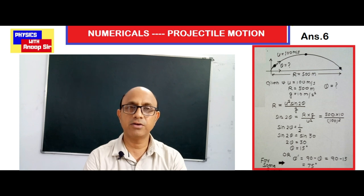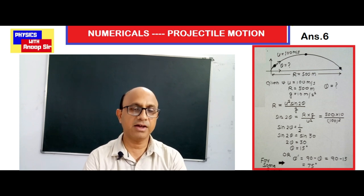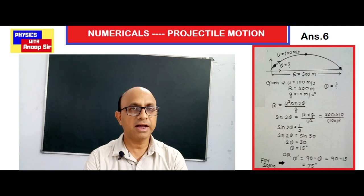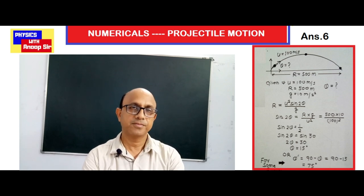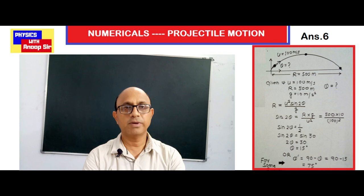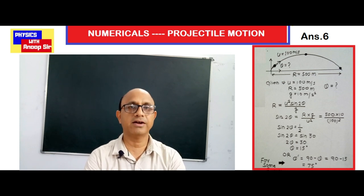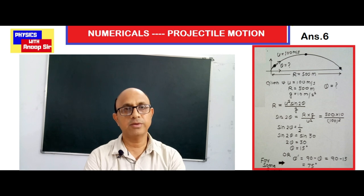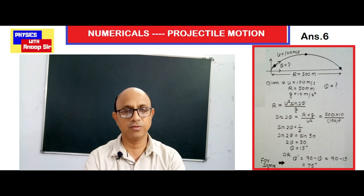At the same time, we know that if a projectile is thrown at angle θ or at angle (90° − θ), it acquires the same range. So to acquire a range of 500 meters, the second possibility is 90° − 15° = 75 degrees also.